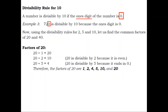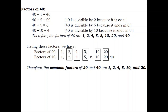Divisibility rule for 10: A number is divisible by 10 if the 1's digit of the number is 0. Example 3: 720 is divisible by 10 because the 1's digit is 0. Now, using the divisibility rules for 2, 5, and 10, let us find the common factors of 20 and 40. Factors of 20: 20 ÷ 1 = 20; 20 ÷ 2 = 10 — 20 is divisible by 2 because it is even; 20 ÷ 5 = 4 — 20 is divisible by 5 because it ends in 0.